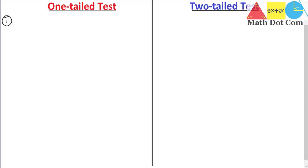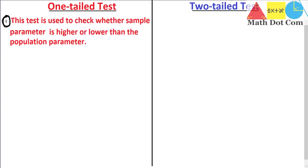Hello everyone. Today we are going to learn the difference between one-tailed test and two-tailed test. I am going to tell you very important information today in this lecture that will clear most of your concepts. A one-tailed test is used to check whether the sample parameter is higher or lower than the population parameter.